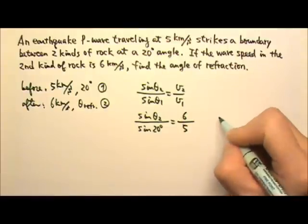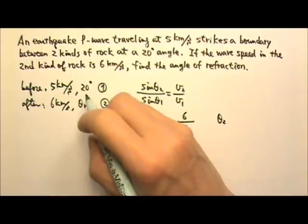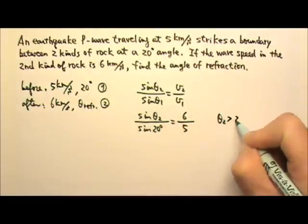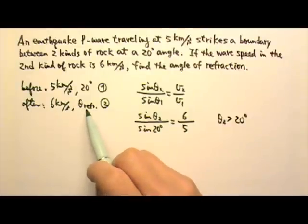we know that we should expect the angle theta 2 to be bigger than 20 degrees, because faster speed means larger angle,